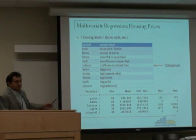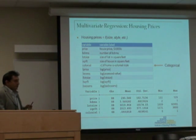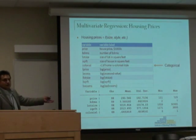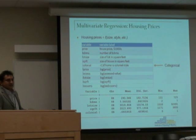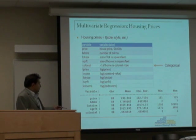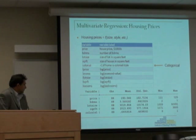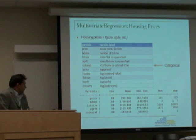The first thing we do is look at the descriptive statistics. In any regression model, you start with the descriptives. We have 88 observations in our dataset. The average price of a house is $293,000, the minimum is $111,000, and the maximum is $725,000.